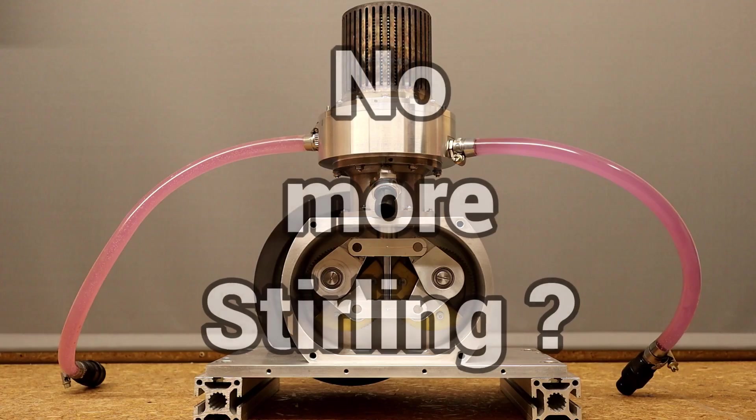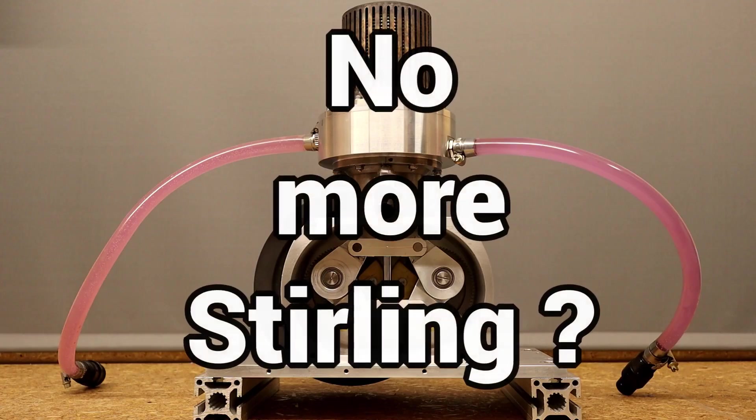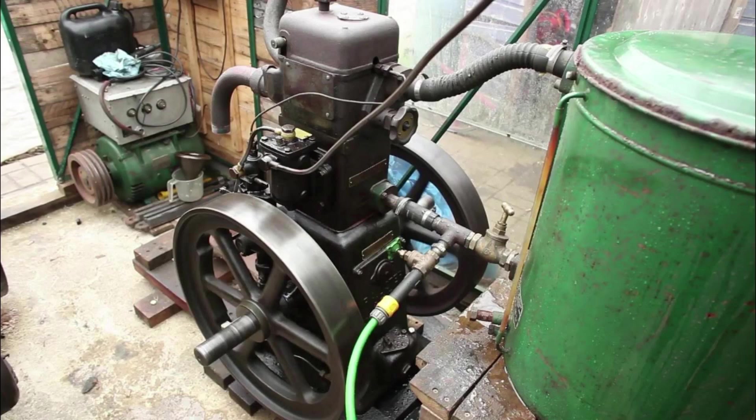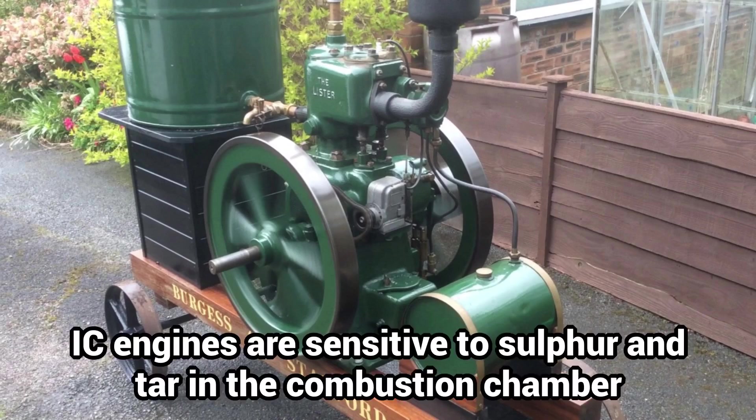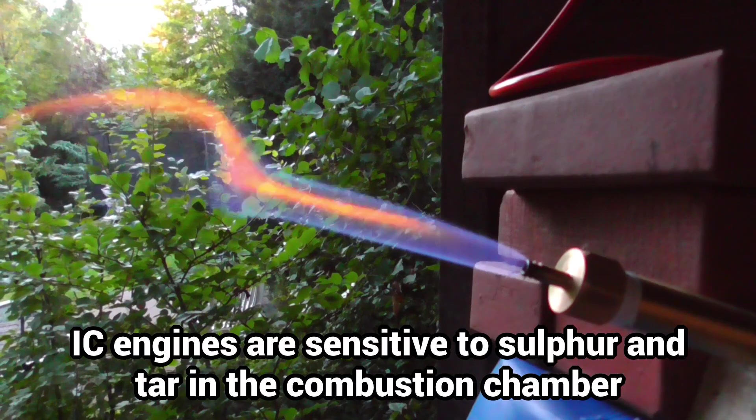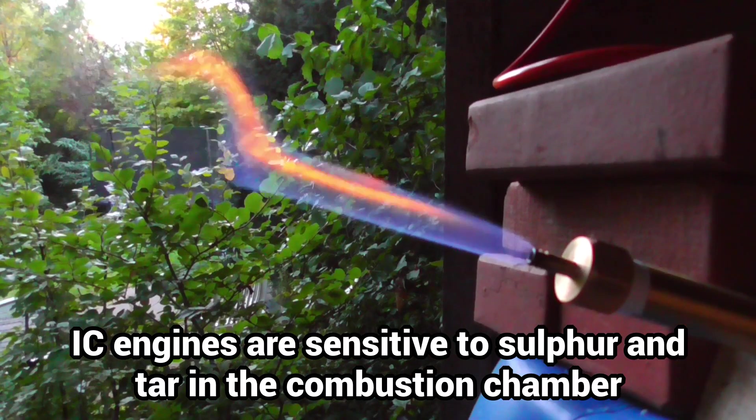Then there are solutions beyond the Stirling principle. The most obvious option would be to convert an internal combustion engine to run on biogas. However, I believe that even a high quality small engine with internal combustion would quickly develop major corrosion problems with a relatively dirty biogas or wood gas.